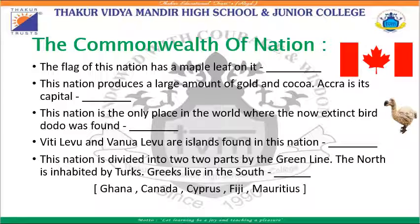The next clue: Viti Levu and Vanua Levu are the islands found in this nation — this nation is Fiji. The last clue: this nation is divided into two parts by the Green Line; the north is inhabited by Turks and Greeks live in the south — this place is Cyprus. These are all the places connected with Commonwealth Nations.